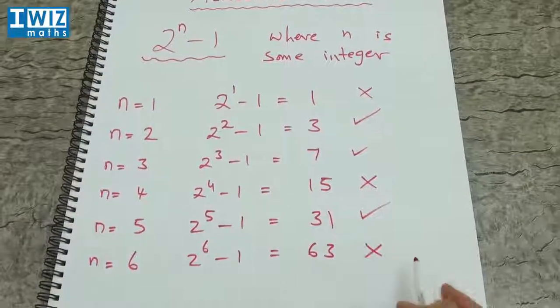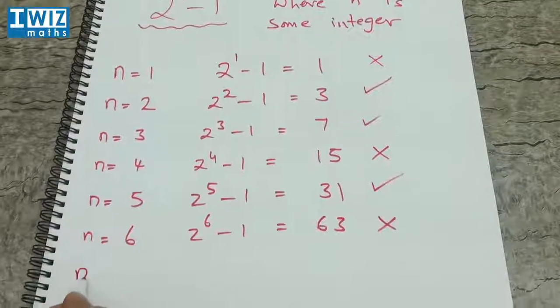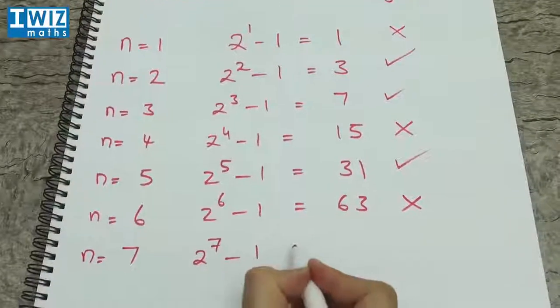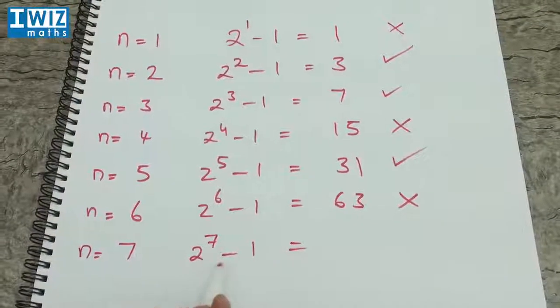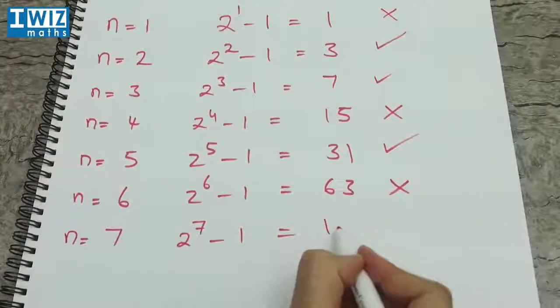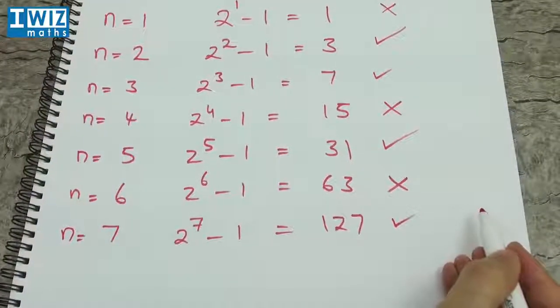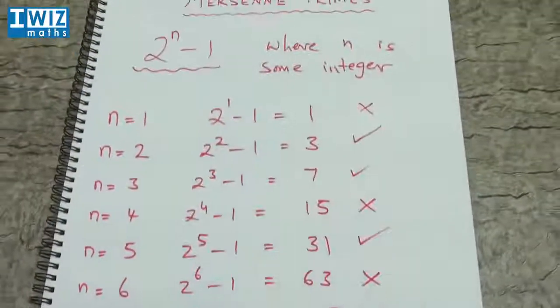n is equal to 7, gives us 2 to the 7 minus 1, which is 128 minus 1, which is 127, which is a prime number and is also a Mersenne prime.